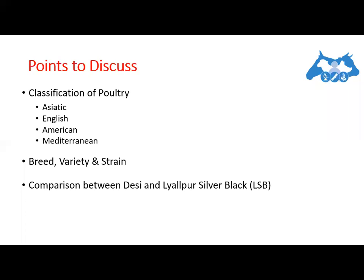Lastly, the fourth class is the Mediterranean class. The Mediterranean is a light class of poultry birds and is used only for egg purpose. The eggshell color is white, their earlobe color is also white, and their skin color is yellow. They do not have feathers on their shank. That completes the classification of poultry.